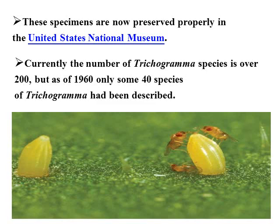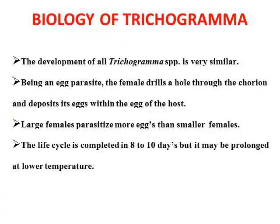Currently, all over the world Trichogramma species number about 200, but as of 1960 only about 40 species had been described for use in agriculture as a pest management tool. The development of all Trichogramma species is very similar as they are all hymenopterans.